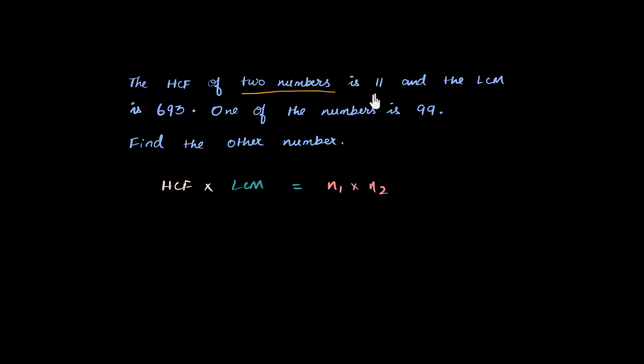I'm going to do it now. So HCF is what? HCF is 11. So HCF is 11 multiplied by LCM is 693. 693. One of the numbers is 99. 99. And the other number is what we want. So now I'm just going to call it N2 maybe. So how do I do this now? I'm going to divide both sides of the equation by 99. So that'll give me N2.